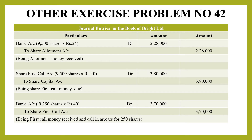Next is how much amount we have received — the journal entry for that. Bank account debit to share allotment account: 2,28,000 rupees received, so that is the entry.